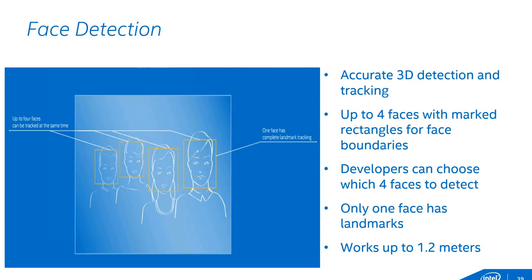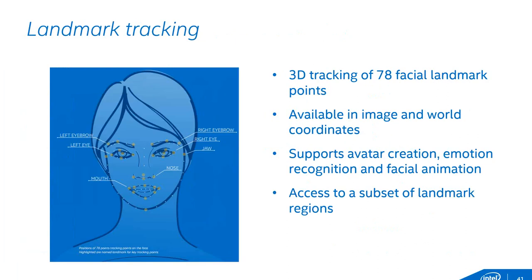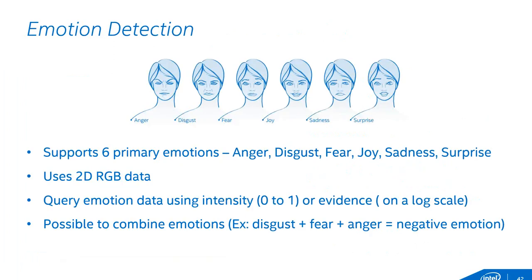For facial detection: we can track up to four faces at a time, though only one of those four can have actual landmarks for deeper interaction. We can do head orientation — pitch, yaw, and roll — which really means nodding your head, shaking your head, or moving it side to side. We have 78 landmark points including eyebrows, eyes, jawline, nose line, and lips. The emotions we're working on initially are anger, disgust, fear, joy, sadness, and surprise. We're better at determining overall positive versus overall negative states.